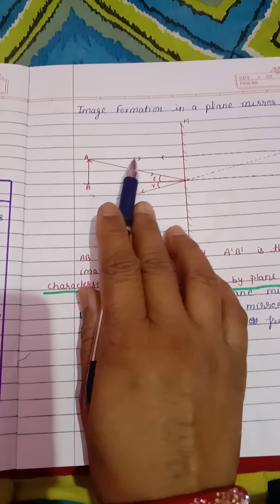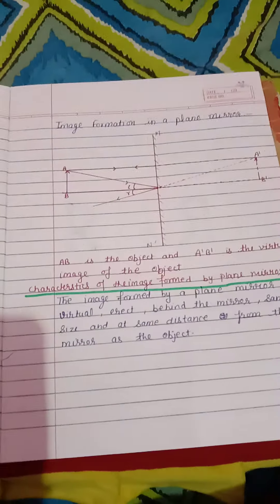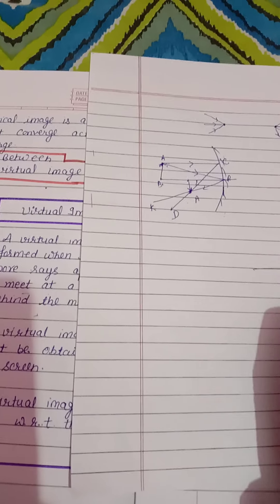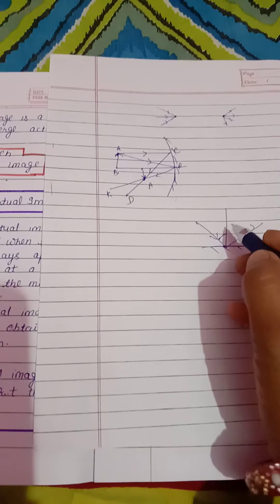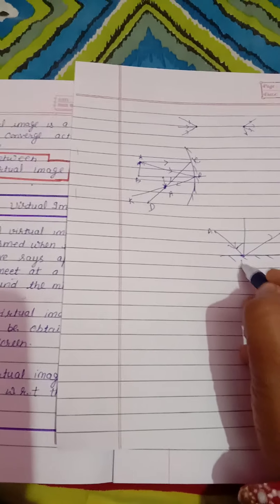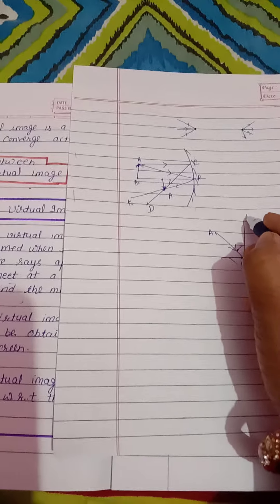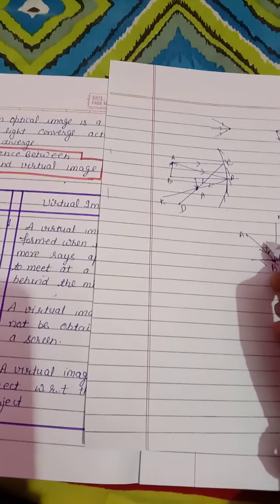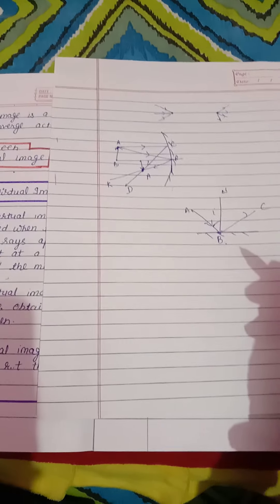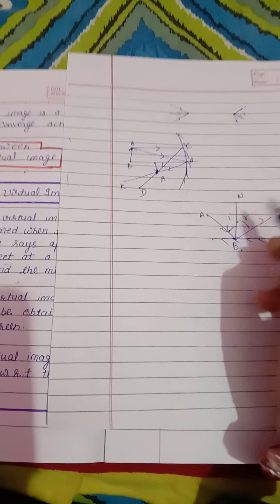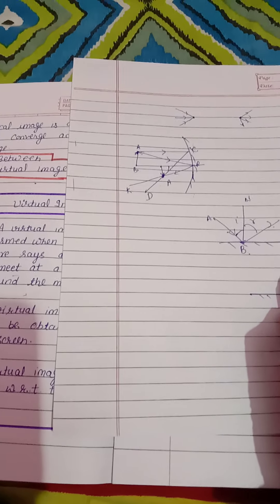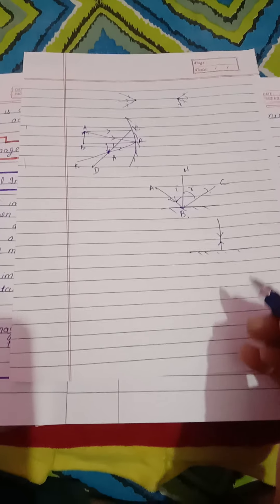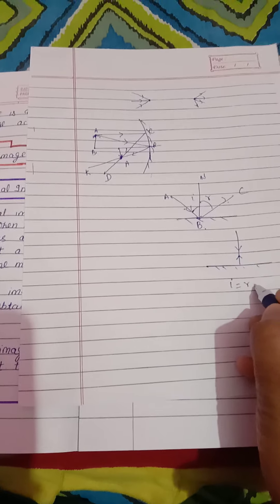जैसे हमने reflection of light में पढ़ा था — यह आपका incident ray है, यह आपकी reflected ray, और यह incident ray normal के साथ angle बना रही है। मान लो कोई ray AB के along incident हुई, BC के along reflect होगी। BN हमारा normal होगा। Incident ray normal के साथ जो angle बनाती है वह angle of incidence है, और reflected ray normal के साथ जो angle बनाती है वह angle of reflection है। अगर normal incident हो किसी भी mirror पर, तो जिस path से वो आती है reflect होके उसी path पर चले जाती है — angle of incidence और angle of reflection दोनों zero होंगे।